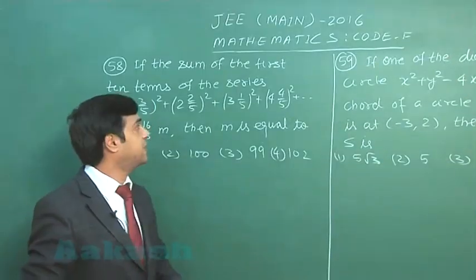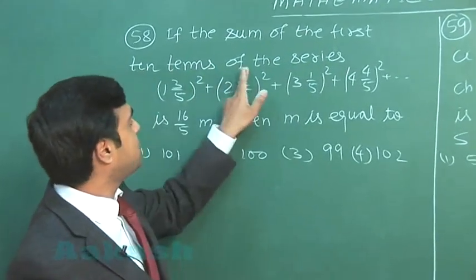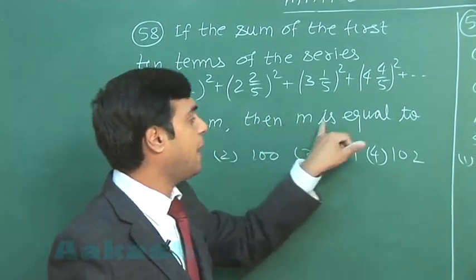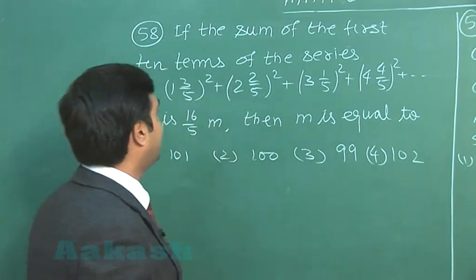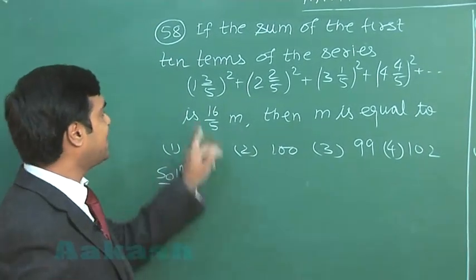Let us move to the question number 58. If the sum of the first 10 terms of the series, the given one, is 16/5 m, then m is equal to. So let us start this one.